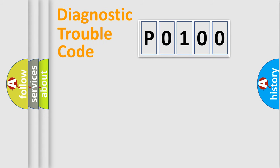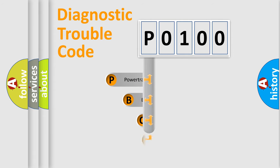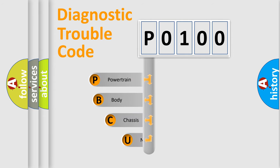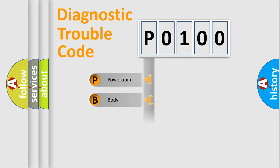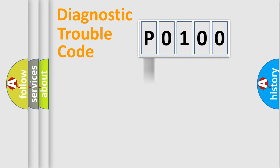First, let's look at the history of diagnostic fault code composition according to the OBD2 protocol, which is unified for all automakers since 2000. We divide the electric system of the automobile into four basic units: Powertrain, Body, Chassis, and Network.